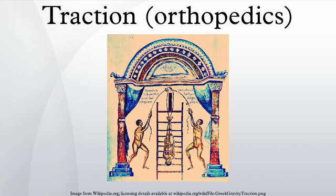Dunlop's traction is used for suprahumeral fractures in children. Although the use of traction has decreased over the years, an increasing number of orthopedic practitioners are using traction in conjunction with bracing.